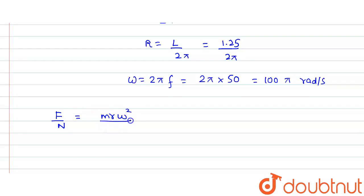So we just calculate the value of F divided by N directly. So it would be equal to m r ω² divided by N. What is the value of the mass which is given? 2. What is the radius which we have calculated? 1.25 divided by 2π.